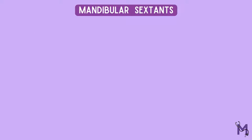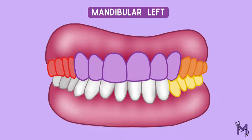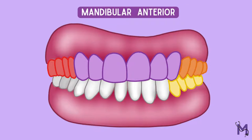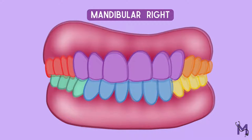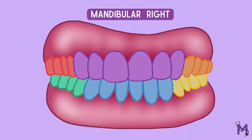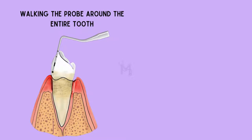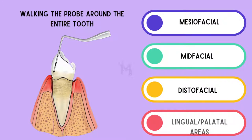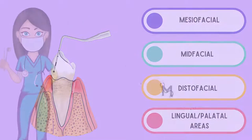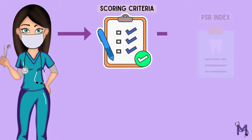The three mandibular sextants similarly include the mandibular left sextant, which covers the teeth from 3.8 to 3.4; the mandibular anteriors, which are 3.3 to 4.3; and lastly the mandibular right sextant, which includes the teeth from 4.4 through 4.8. Each tooth is probed with the clinician walking the probe around the entire tooth, thus examining the mesiofacial, midfacial, distofacial, and corresponding lingual or palatal area.